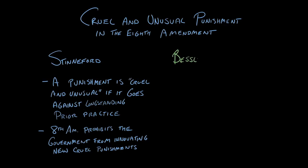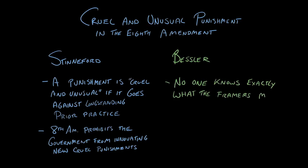When the U.S. Bill of Rights was adopted many decades later, they had their own issues that they were struggling with. The history shows that the American founders probably meant something different than the English meant, because it was done over 100 years later. But no one knows exactly what was meant when they adopted that wording. To give an example, when the bill was debated in Congress, a delegate from South Carolina said that he objected to the words 'nor cruel and unusual punishments' because the import of them was too indefinite.